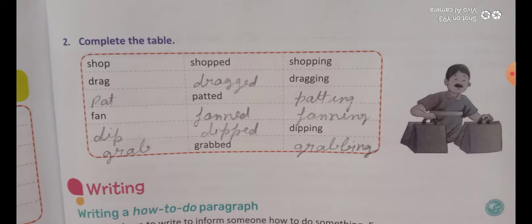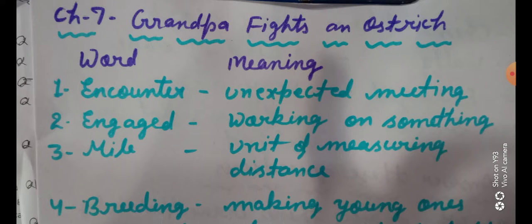Now I am going to show you the word meanings. Encounter: unexpected meeting. Engaged: working on something. Mild: unit of measuring distance. Breeding: making young ones.